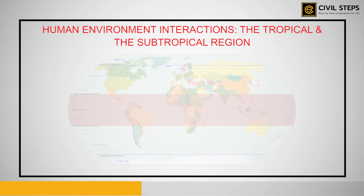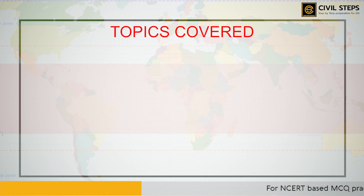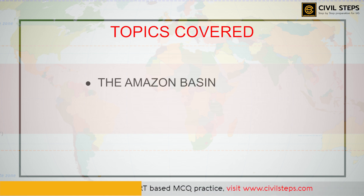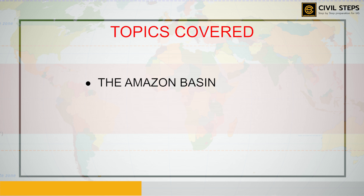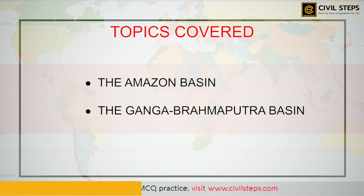The name of our chapter is Human Environment Interactions: The Tropical and Subtropical Region. In this video, we will be learning about two important things: first, the Amazon basin — its location, climate, vegetation, fauna, and people; and second, the Ganga-Brahmaputra basin — its location, topography, climate, human settlement, vegetation, fauna, transportation, and tourism.